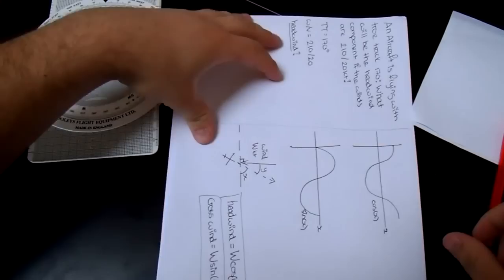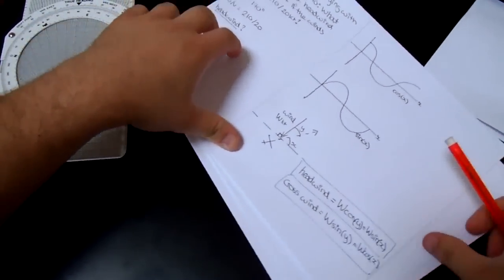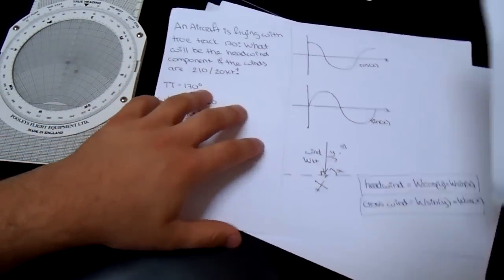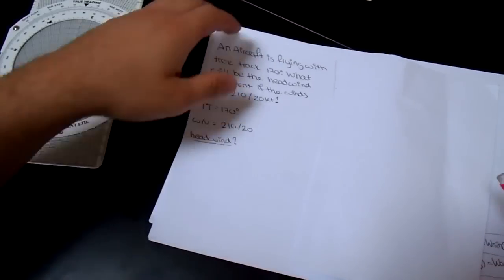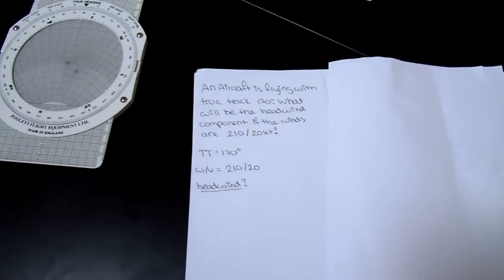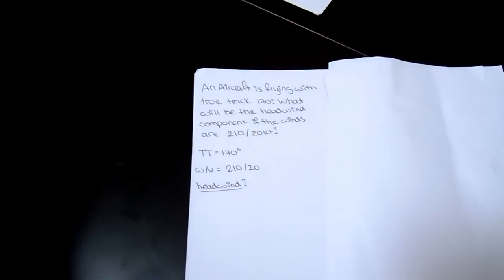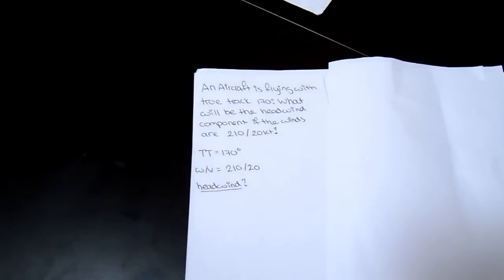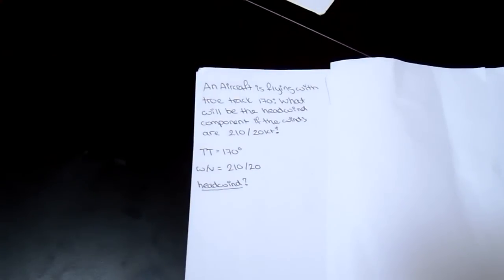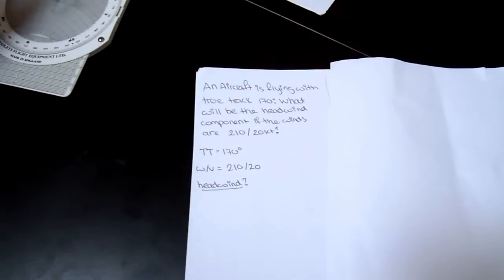Right, now the second problem I want to look into is wind components. And actually, I'm going to cover the second half for now, because this is really, really simple. The thing is, the CRP methods to find wind components is pretty rubbish. It takes too long, and it's not very accurate. So I propose an easier, faster, and more accurate method, which is using this beautiful thing and some simple mathematics.